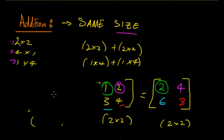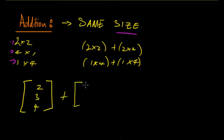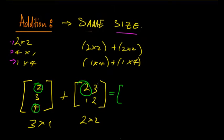Here's an example where you cannot add matrices. If you have [2; 3; 4] plus [2, 3; 1, 2], you can't add these because the first is three by one and the second is two by two. They need the exact same number of rows and columns. For instance, there's a third row, first column in the first matrix but no corresponding entry in the second, so addition is impossible.